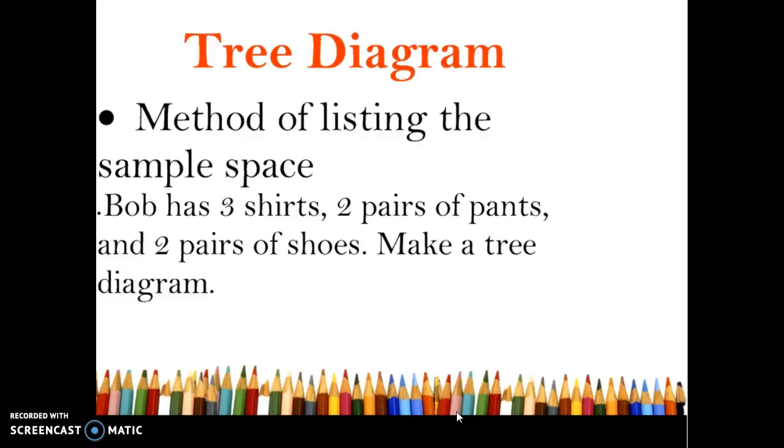A tree diagram is a method of listing the sample space, just a way of writing out all the possibilities. For this one Bob has three shirts, two pairs of pants, and two pairs of shoes. We want to make a tree diagram. So we all start from the same one and if he chooses his shirts first you have option 1, 2, and 3, and then from each of those shirts you have two pairs of pants to go with it.